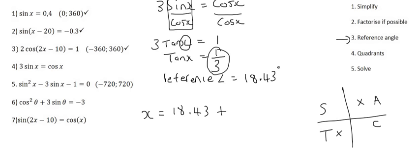Now here's the next important part: a tan graph repeats itself every 180 degrees, not every 360 degrees. So you just say plus k times 180 — that is the answer. If you forget that tan only needs one quadrant and you do it in quadrant three as well, teachers will never mark that wrong, you'll just be wasting a little time. But what is very important is that you use 180 here — it is wrong if you change that to 360.